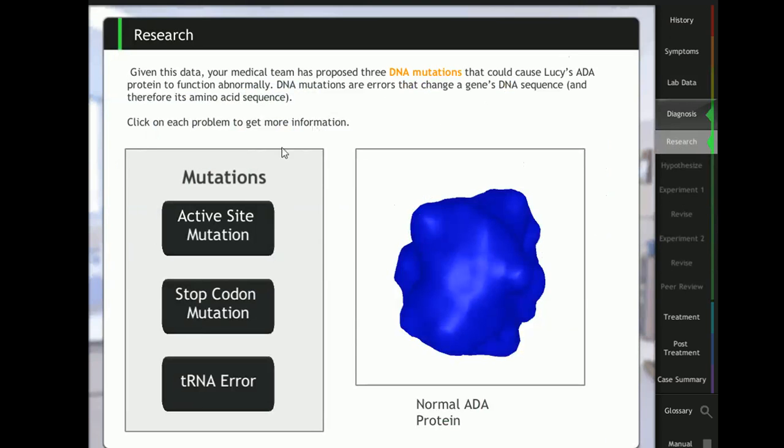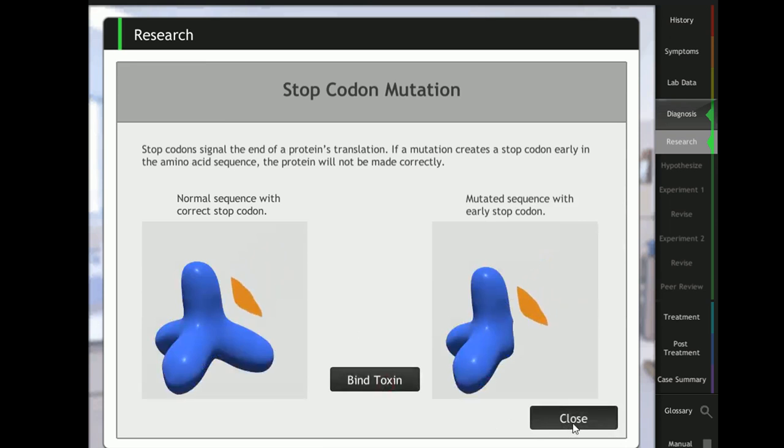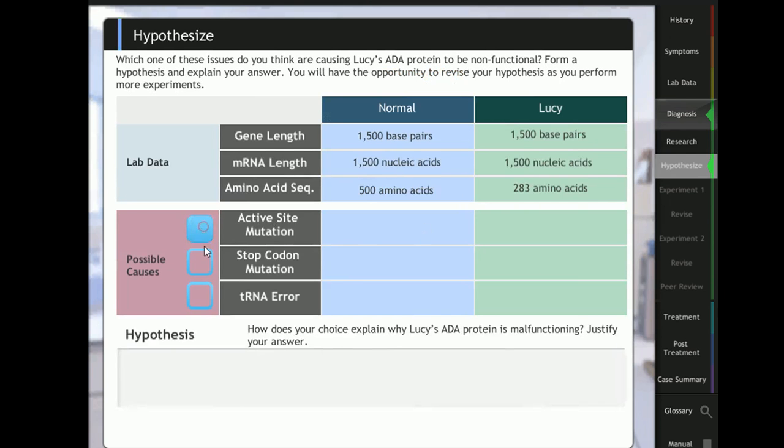Students then analyze Lucy's blood to determine which of three possible mutations is causing her disease, then form a hypothesis.